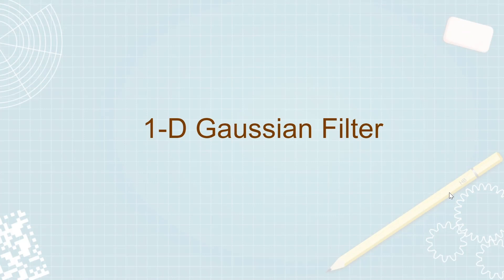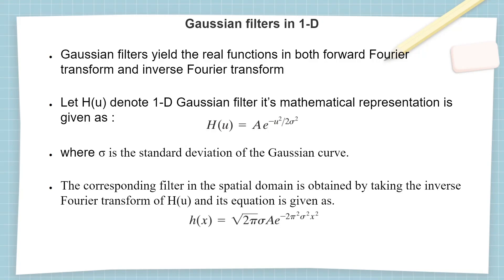A Gaussian filter is a low-pass filter used for reducing noise — that is high frequency components — and blurring regions of images. Gaussian filters are special because they yield real functions in both the forward and inverse Fourier transform. In the frequency domain the Gaussian filter is h(u) = A·e^(−u²/2σ²), where u is the frequency, A is amplitude, and σ is the standard deviation. The corresponding spatial domain filter is h(x) = √(2π)·σ·A·e^(−2π²σ²x²). As σ grows in the frequency domain the bell curve widens, whereas conversely in the time domain the bell curve narrows.